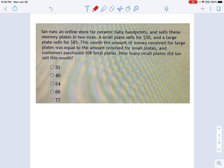Ian runs an online store for ceramic baby handprints and sells these memory plates in two sizes. That's what we're given here. We got this paragraph, and it's describing a situation where you have to determine how many of one thing he sells, in this case small plates for $50, and how many of another thing he sells, large plates for $85.